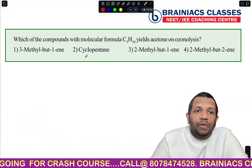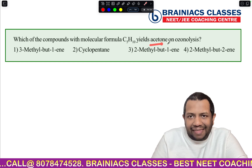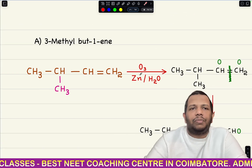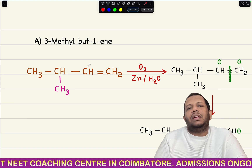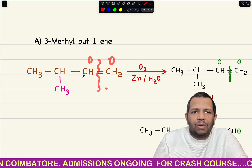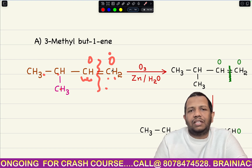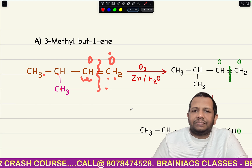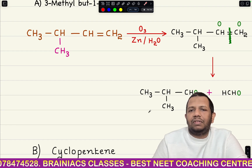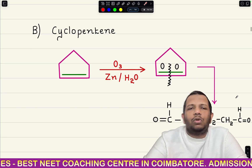Now let's go to the question. Which compound with molecular formula C5H10 yields acetone on ozonolysis? Taking option A — 3-methylbutene — from writing the compound itself you can see: when you break it and put oxygen on both sides, you get CH3CH(CH3)CHO and HCHO (formaldehyde). These are not acetone, so we can leave option A.